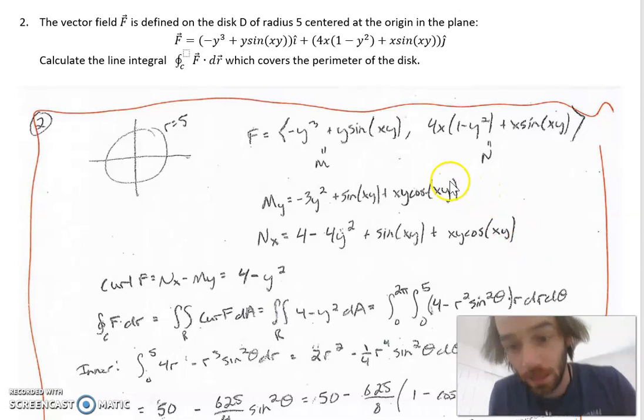This is where it becomes kind of convenient. Notice, look, that term's there and that term, oh they match, sweet. So when I do N_x minus M_y, the curl for this vector field...